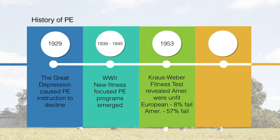Around 1953, the Kraus-Weber fitness test was designed to compare American students with European students and gauge how fit they were. It was similar to fitness gram testing — a battery of push-ups, curl-ups, the mile run, and flexibility activities. In the comparison, Americans performed extremely poorly: where Europeans had about 8% fail the test, Americans had about 57% failing. This caused shock, prompting calls to improve the rigor and expectations of physical education and increase its focus significantly. By the mid-to-late 1950s, physical education programs were cracking down on high expectations.